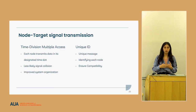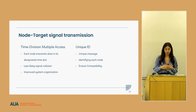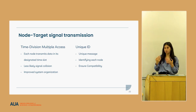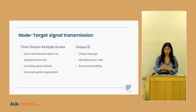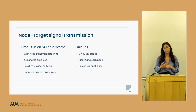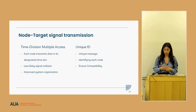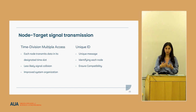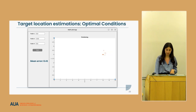For node-to-target signal transmission, we used time division multiple access (TDMA), meaning at distinct times distinct nodes send their signals and the target receives them. Frequency division multiple access was another option but was more complex and less efficient in noisy environments. With each message, the node sends a unique ID and the target verifies that the received signal is from the correct node before taking measurements.